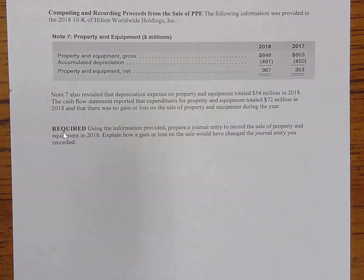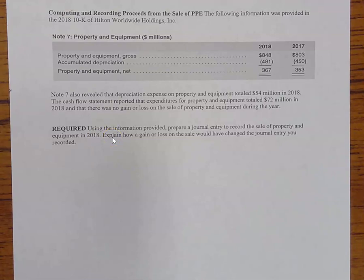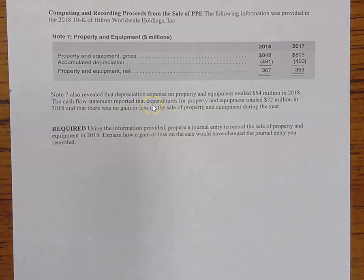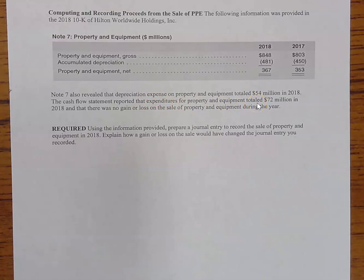Here's what they want from us. Required: using the information provided, prepare a journal entry to record the sale of property and equipment in 2018, and explain how a gain or loss on the sale would have changed the journal entry. Note 7 also revealed that depreciation expense on property, plant, and equipment totaled $54 million in 2018. The cash flow statement reported that expenditures for property, plant, and equipment totaled $72 million in 2018, and there was no gain or loss on the sale of property and equipment during the year.